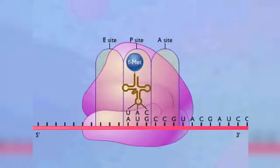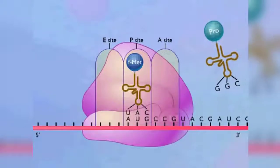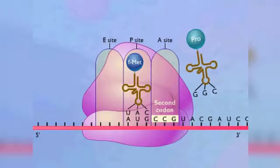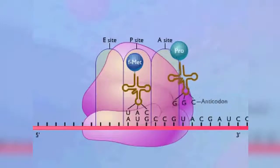The initiating transfer RNA carrying formyl methionine binds to the P-site. A transfer RNA that recognizes the next codon and carries the second amino acid then moves into the A-site.